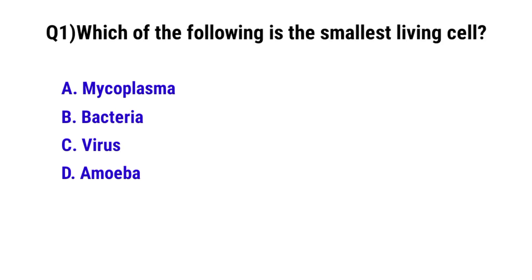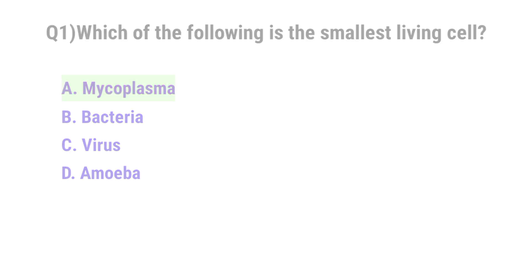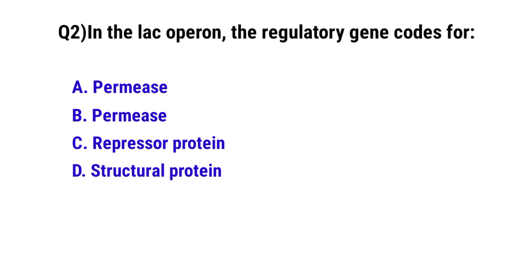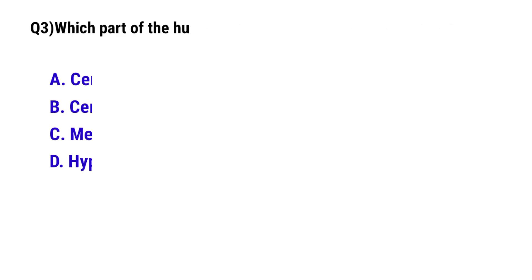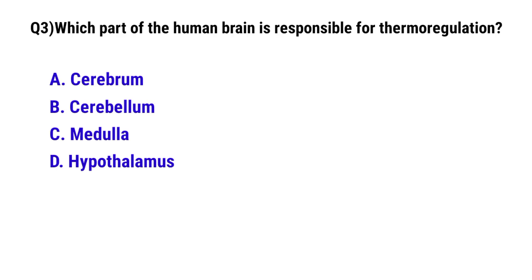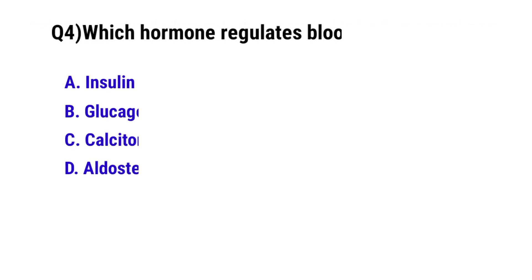Question 1: Which of the following is the smallest living cell? The correct option is A: Mycoplasma. Question 2: In the lac operon, the regulatory gene codes for? The correct option is C: repressor protein. Question 3: Which part of the human brain is responsible for thermoregulation? The correct option is the hypothalamus.